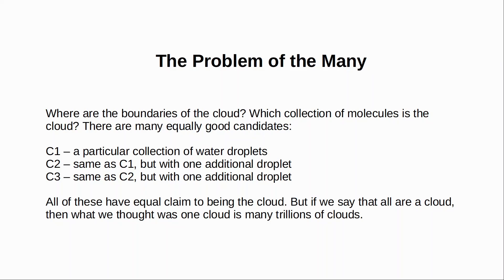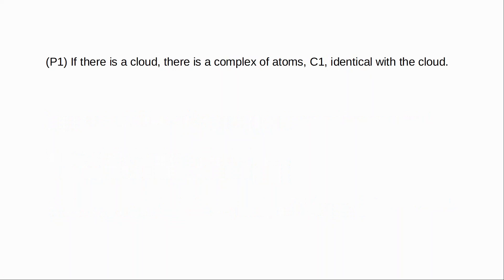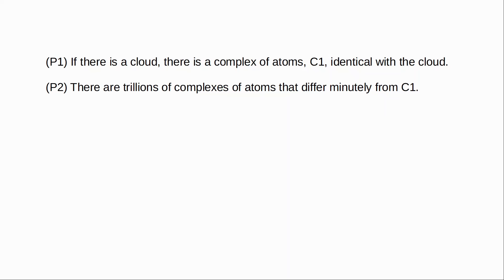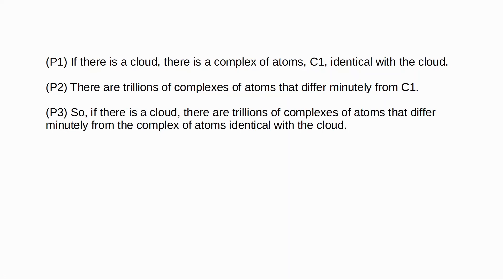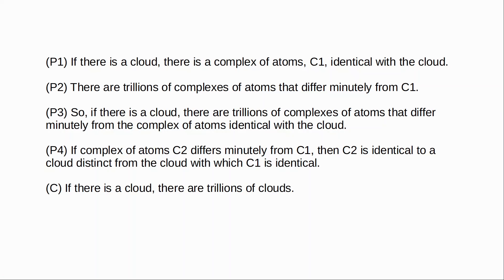The argument can be presented like this. If there is a cloud, there is a complex of atoms C1 that is identical with the cloud. There are trillions of complexes of atoms that differ minutely from C1. If a complex of atoms C2 differs even minutely from C1, then C2 is identical with a cloud distinct from the cloud with which C1 is identical — obviously two things that differ can't be the same thing. Conclusion: if there is a cloud, there are trillions of clouds.